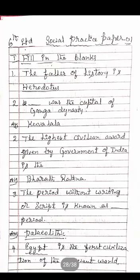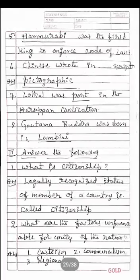Fifth: Egypt (E-G-Y-P-T) is the first civilization of the ancient world. Sixth: Hammurabi (H-A-M-M-U-R-A-B-I) was the first king to enforce the code of laws. Seventh: Chinese wrote Pictographic (P-I-C-T-O-G-R-A-P-H-I-C) script. Eighth: Lothal was a port (P-O-R-T) in the Harappan civilization.